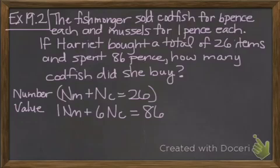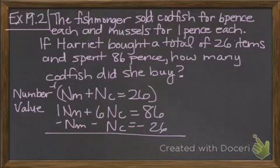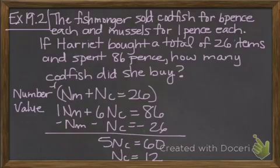We'll go ahead and solve this one. This time we'll solve it by elimination. We'll multiply everything in the top by negative 1. We get negative n sub m minus n sub c equals negative 26. Then we'll add, so we get 6 minus number of cod is 5. Number of cod equals 60. Divide both sides by 5 and we get the number of cod is 12.